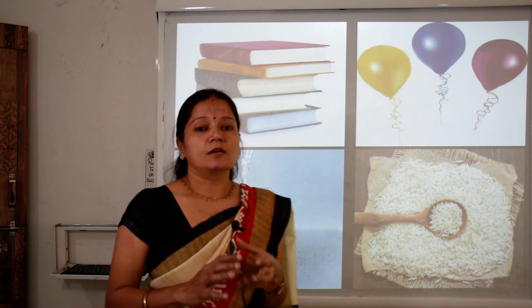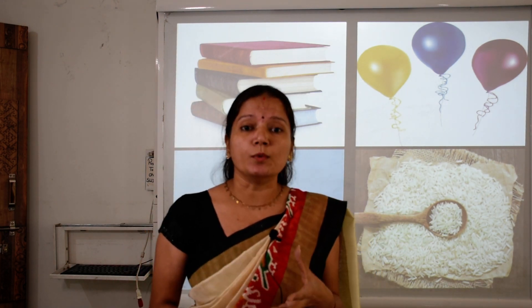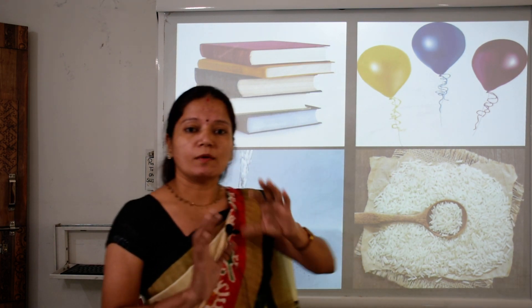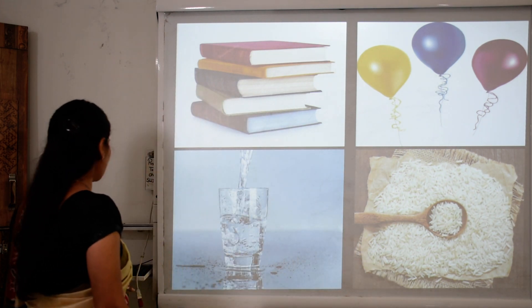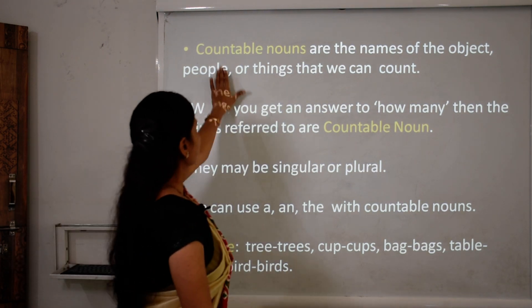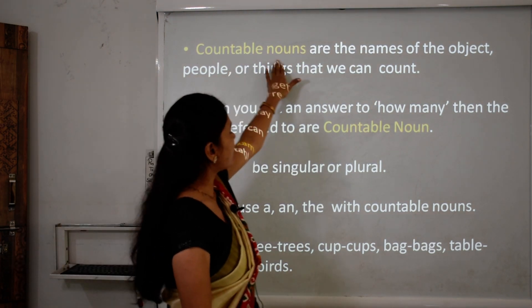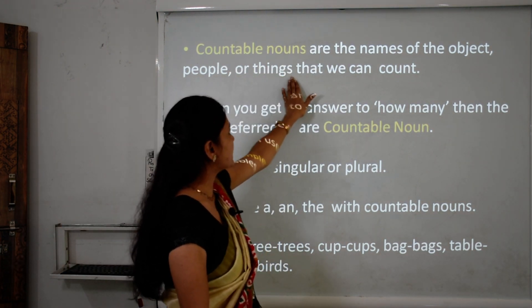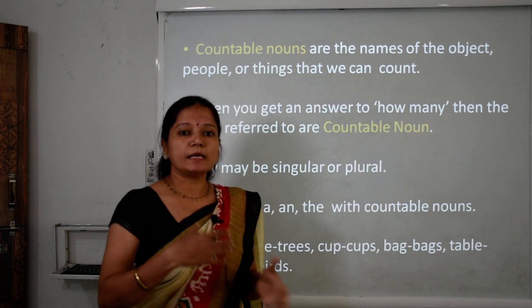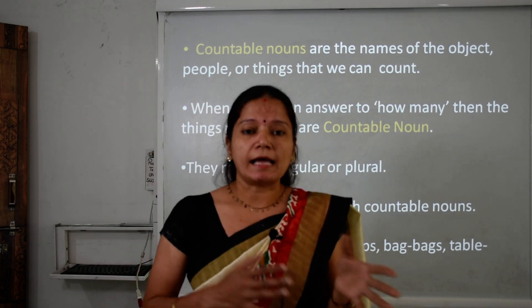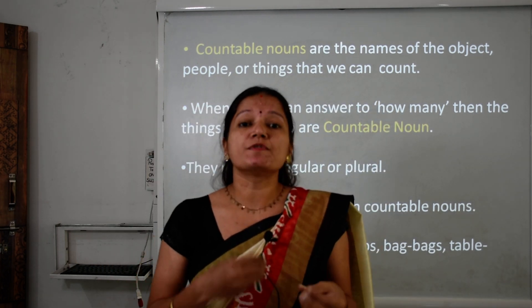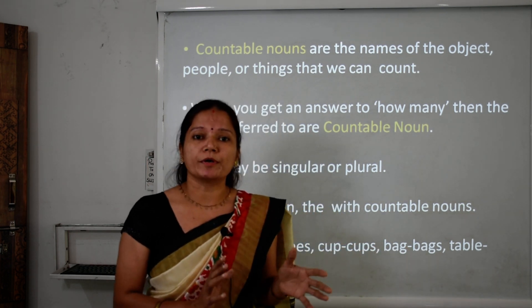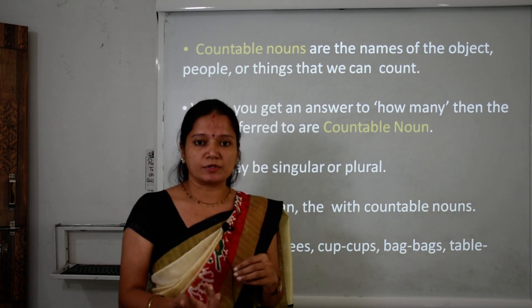Those nouns which we can count are called countable nouns. Countable nouns are the names of objects, people, or things that we can count — the names of objects, people, and things which we can count by using numbers. That is called countable nouns.